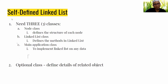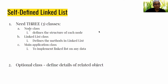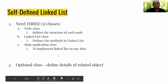From now on I will be focusing on the self-defined linked list. To implement a self-defined linked list, we need three compulsory classes and one optional class. The three main classes are compulsory for the basic structure. If you are dealing with objects, you need an additional class.